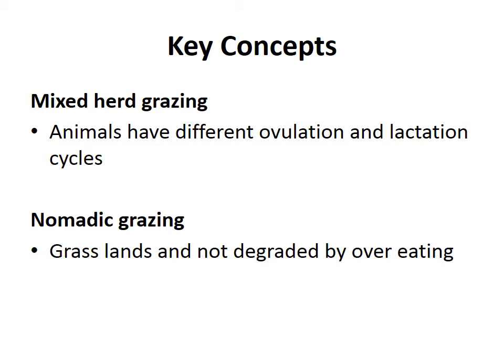Different animals have different reproductive cycles — they like to give birth at different times of year, which means the mothers will be producing milk at different times of year. For a Mongol herdsman this gives two advantages. First, if you keep a herd of different animals, you're not managing the births of so many different young animals all at once, keeping you more on top of the birthing process. Second, you're more likely to have milk throughout the year rather than just for the period immediately after one sort of animal has given birth.